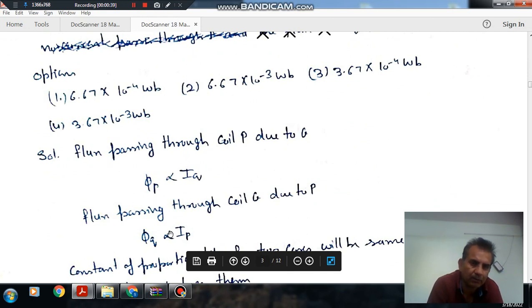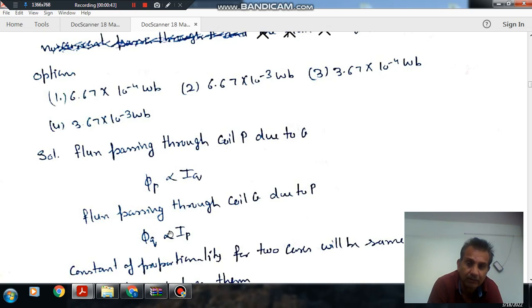When no current passes through P, a current of 2 ampere passes through Q. The flux through P is: option 1, 6.67×10^-4 weber; option 2, 6.67×10^-3 weber; option 3, 3.67×10^-4 weber; option 4, 3.67×10^-3 weber.